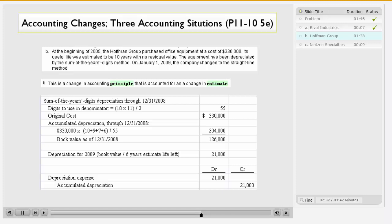So, if we take the $330,000 times the sum of 4 years worth of digits, which would be 10 plus 9 plus 7 plus 6, and divide that by the digits to use in the denominator, which is 55, we come up with accumulated depreciation through 12-31-2008 as $204,000. Therefore, the book value is the original cost less the accumulated depreciation, and that amounts to $126,000.